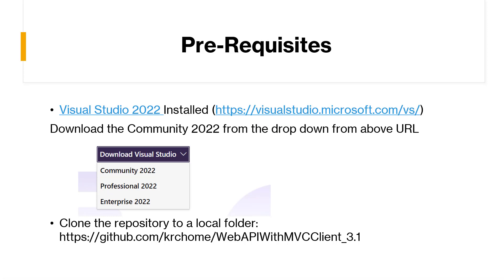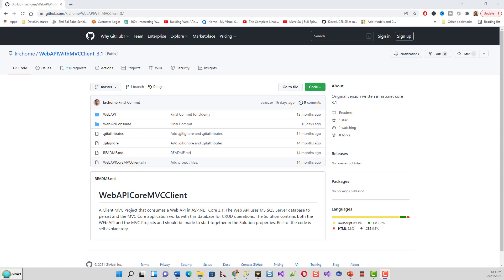Then you need to clone the repository. This is the repository where I have put a web API with MVC client 3.1 project, which I will migrate to ASP.NET 6. We'll go through the entire process — please follow from beginning to end to learn the full process.